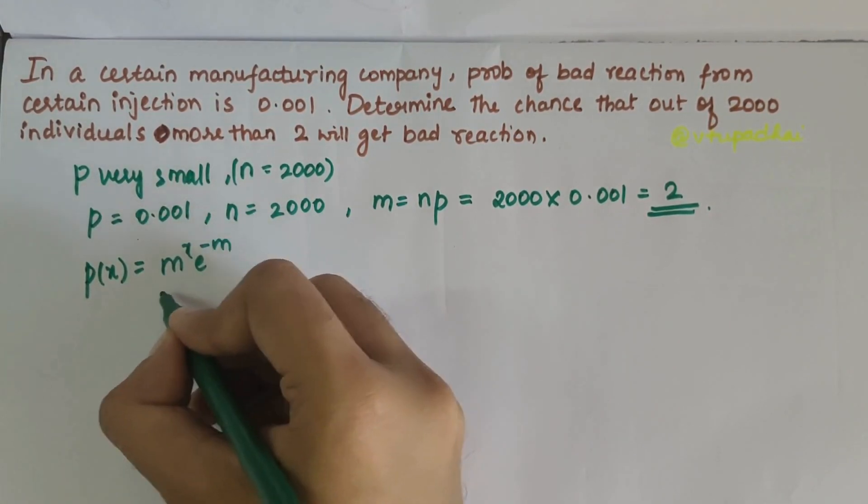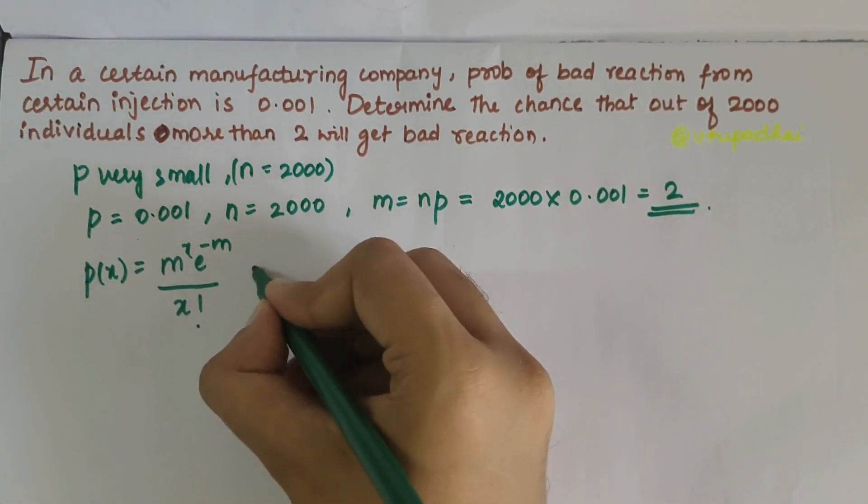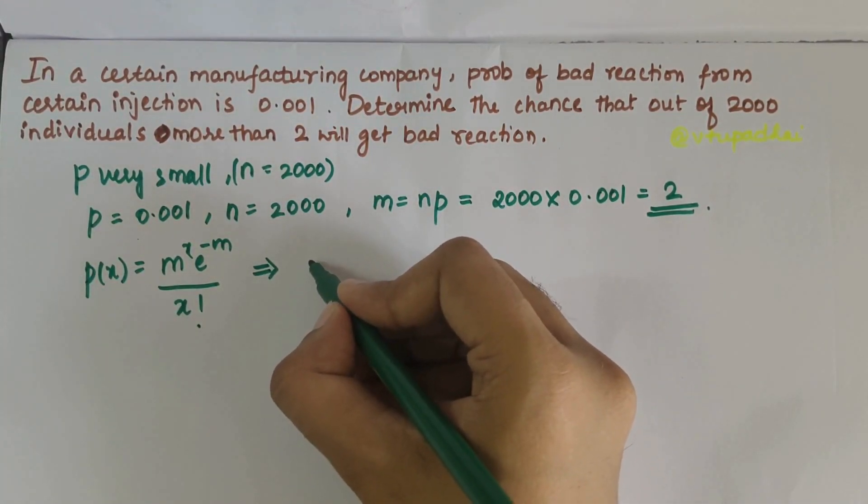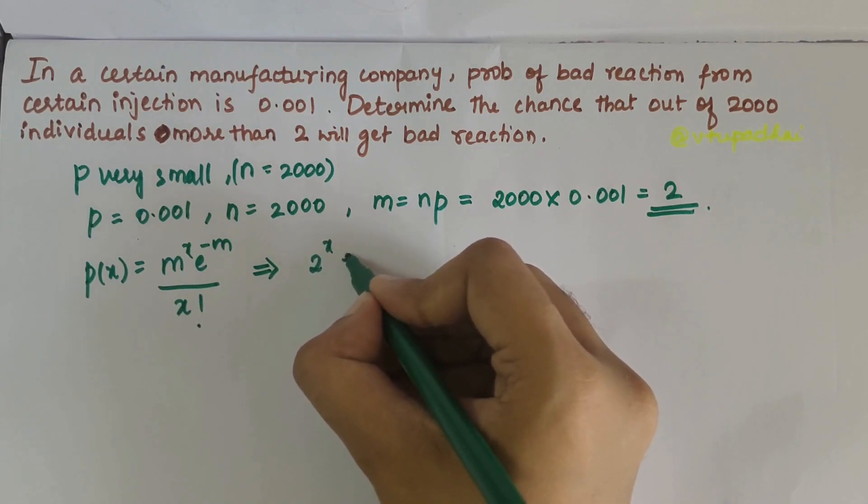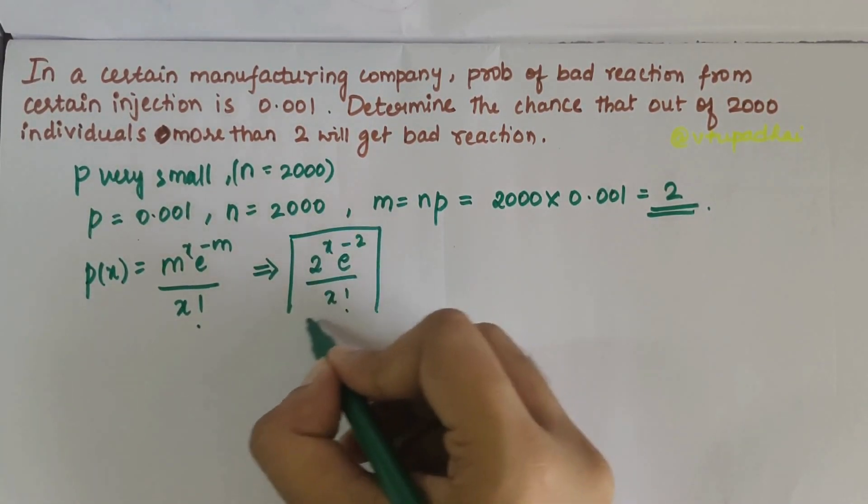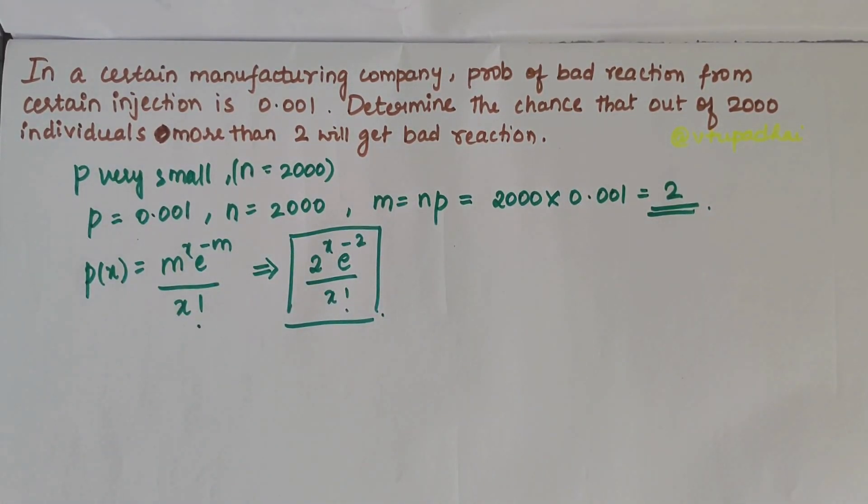Now let's write the Poisson distribution equation: P(x) = m^x × e^(-m) / x!. This equation can be written as P(x) = 2^x × e^(-2) / x!, which is the general equation for this problem.